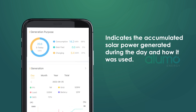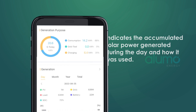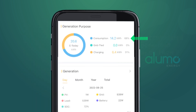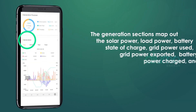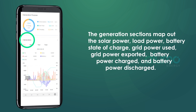The Generation Purpose section indicates the accumulated solar power generated at a certain point in time for the day and how it was used. The consumption value is the amount of solar power applied to AC loads. The grid-tied value is the surplus power exported to the utility. The charging value is the solar power used to charge the battery. The ratio of each to the accumulated solar power generated is displayed as a percentage.